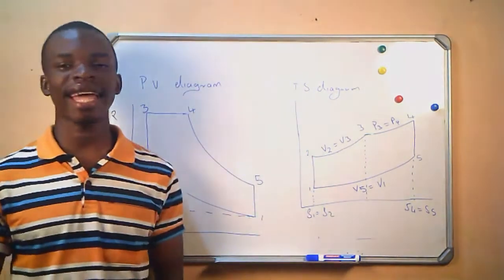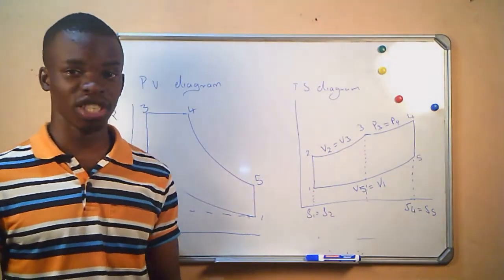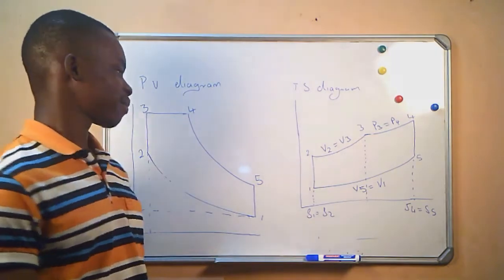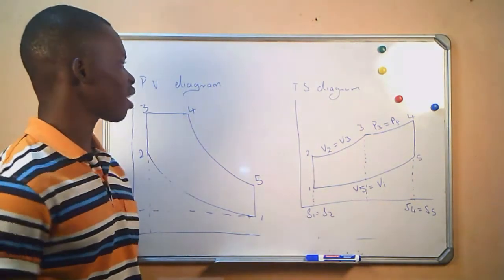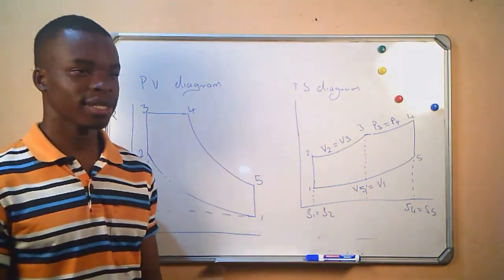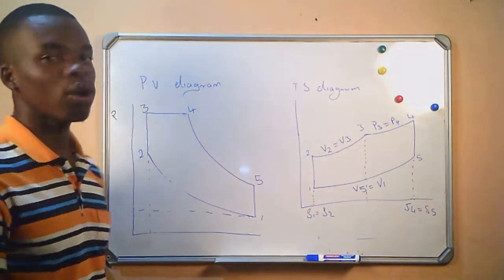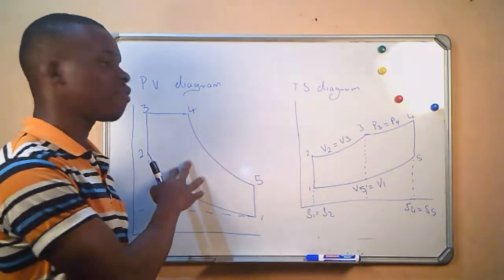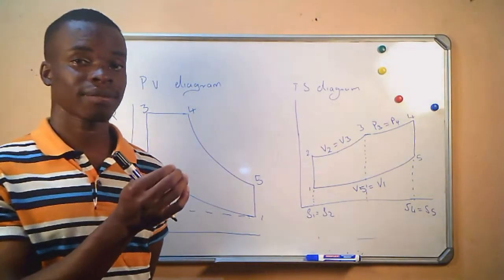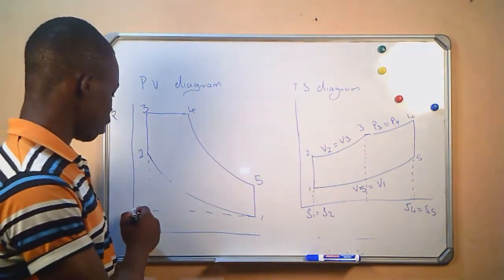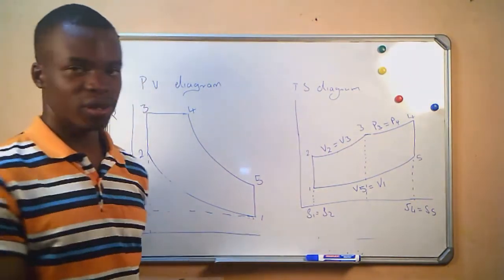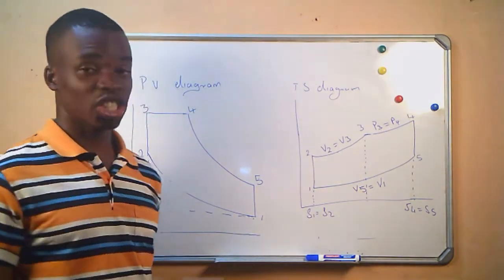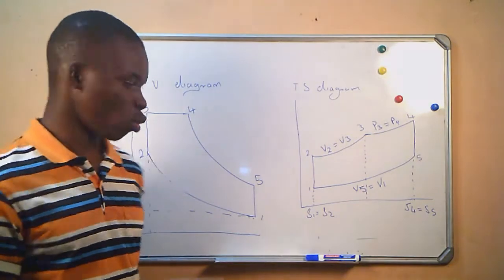Joule cycle is basically the combination of the Otto cycle and the diesel cycle. We have the PV diagram of the Joule cycle on the board, and by now we already know that when we draw the PV diagram of the cycles, we will take it as if we are working with a closed system, meaning we are not going to consider the induction and the exhaust stroke.